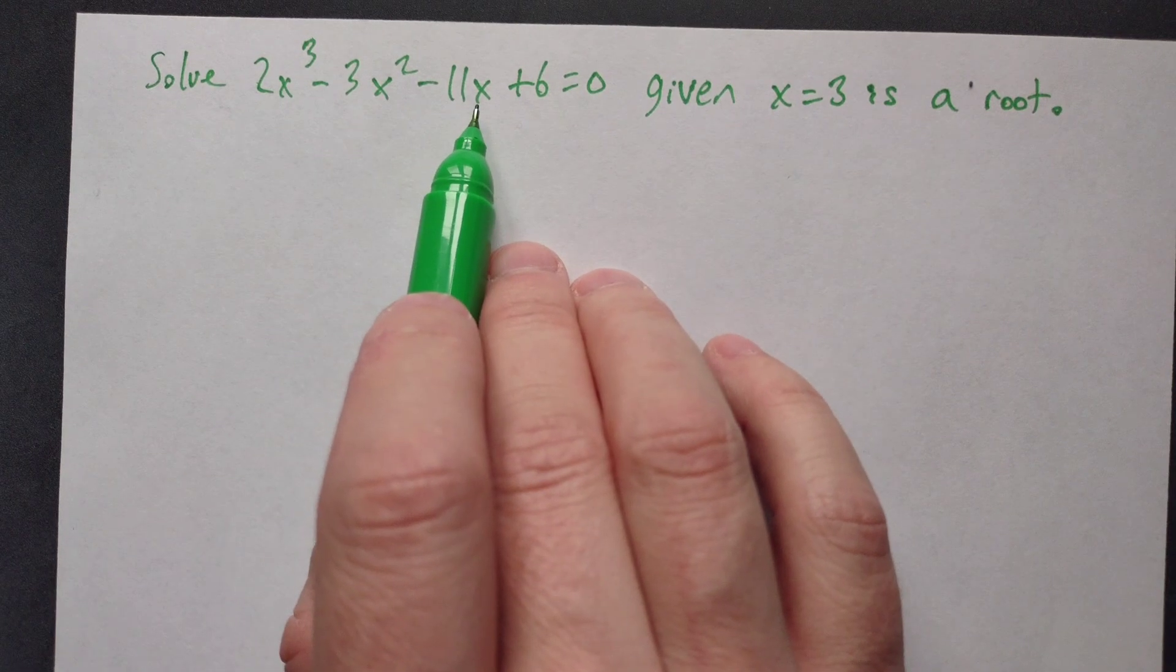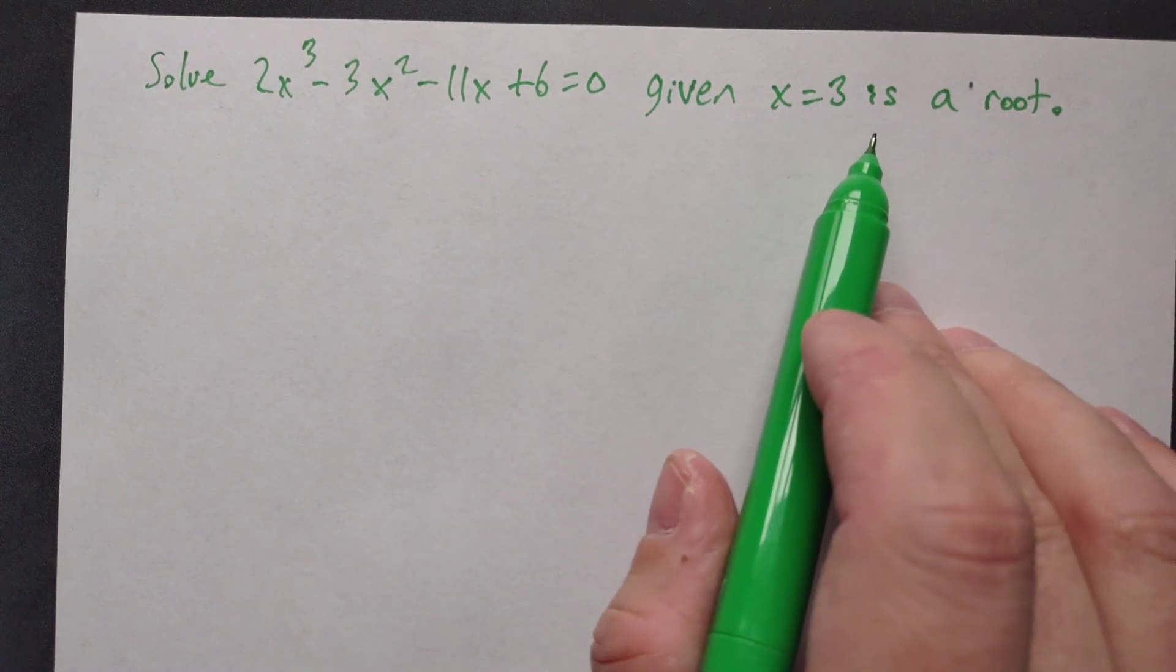Solve 2x³ - 3x² - 11x + 6 = 0, given that x = 3 is a root.